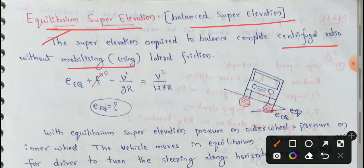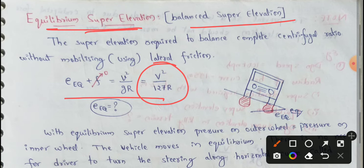In the previous video, we discussed the super elevation formula: e + f = v²/(127r)